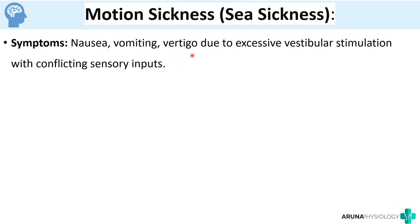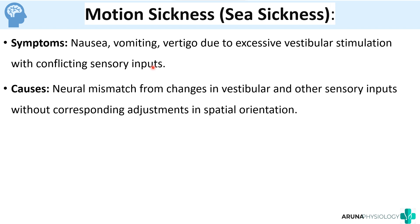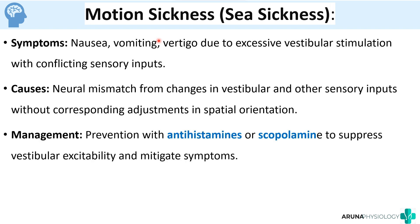You can finish with an applied aspect — motion sickness or sea sickness. The main symptoms are nausea, vomiting, and vertigo, caused by excessive vestibular stimulation. There are conflicting sensory inputs coming in, causing a neural mismatch from changes in vestibular and other sensory inputs without corresponding adjustments in spatial orientation. This leads to excessive vestibular stimulation and motion sickness. Management includes antihistamines or scopolamine to suppress vestibular excitability and decrease symptoms.